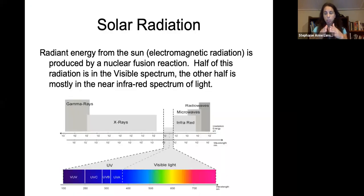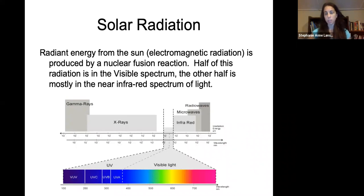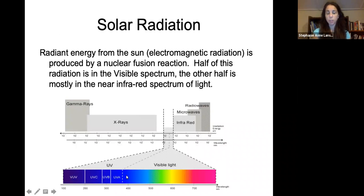To be clear on solar radiation — this radiant energy, this light that comes from the sun, is electromagnetic radiation. Half of it is in the visible spectrum, but the other half is mainly in the near-infrared spectrum of light.